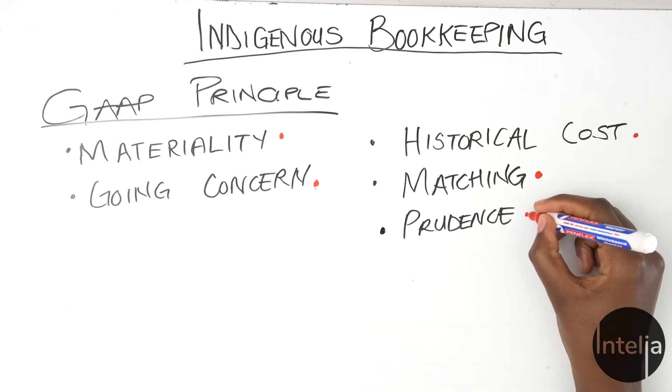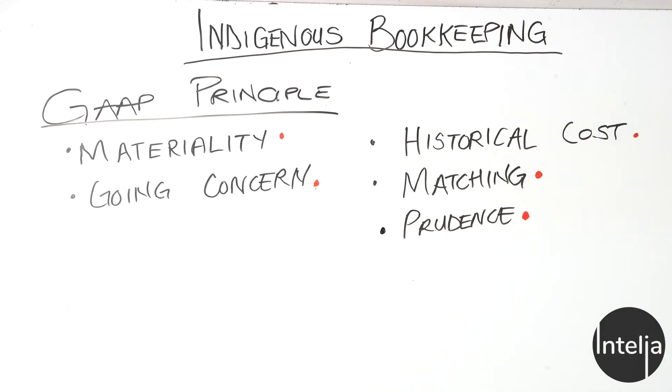The matching principle says that you should be able to identify a specific transaction and put it in the right place — quite straightforward. Then there's prudence. It basically means don't overestimate. It's better to slightly underestimate what could result — it's better to underestimate and be surprised when you get higher revenue, than to overestimate and be disappointed. So prudence means be as cautious as possible and don't overestimate what you could get as a return.